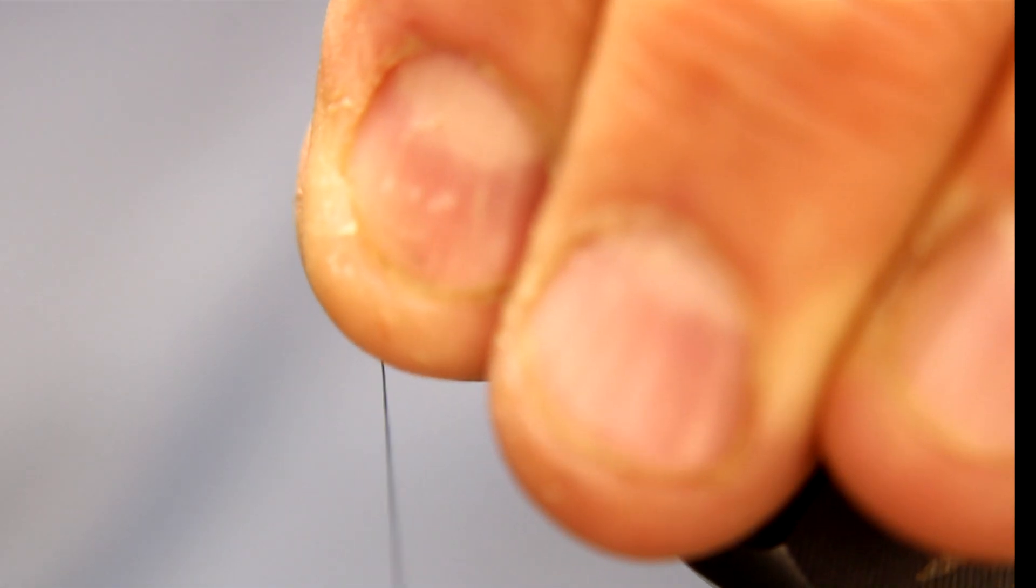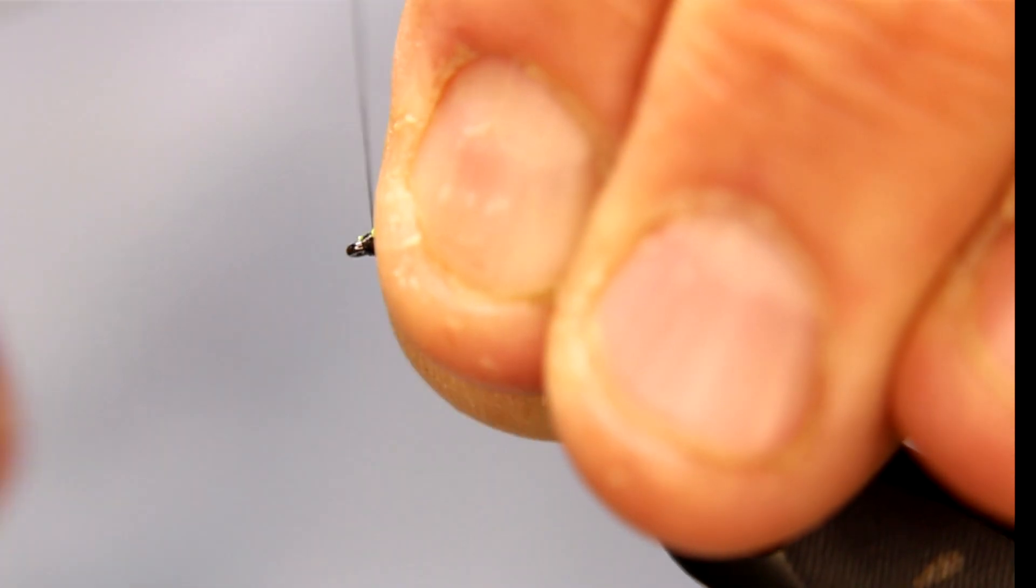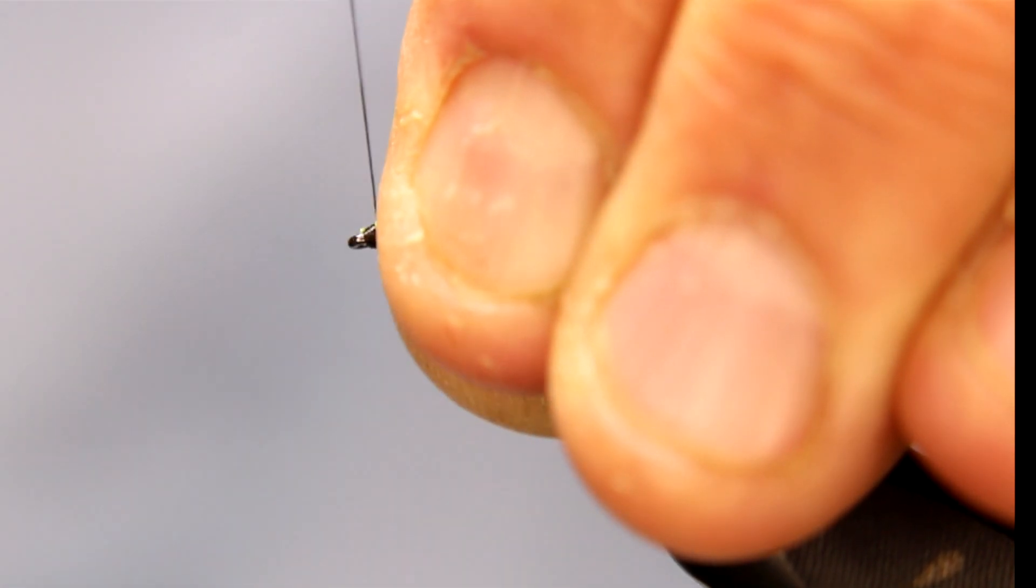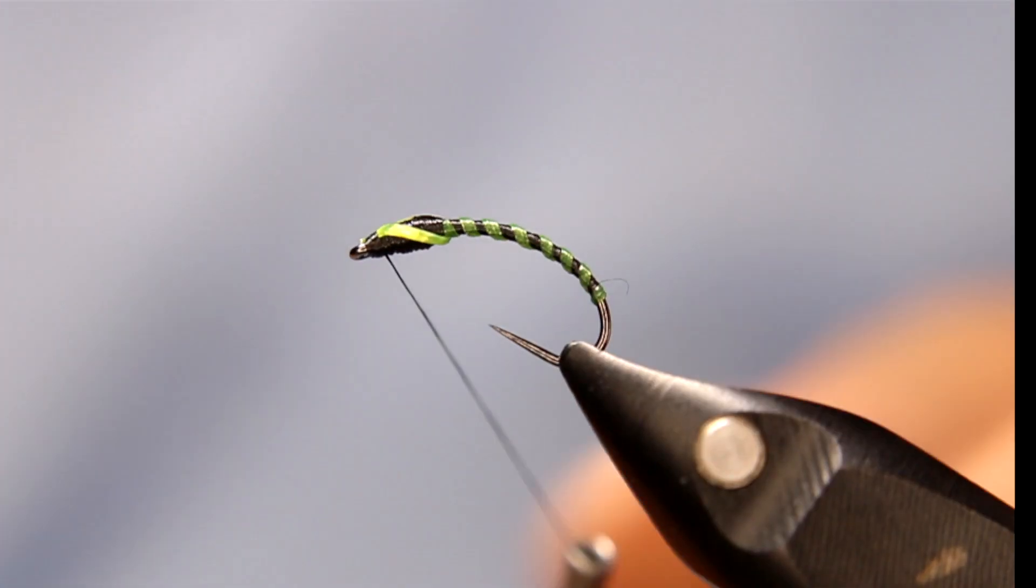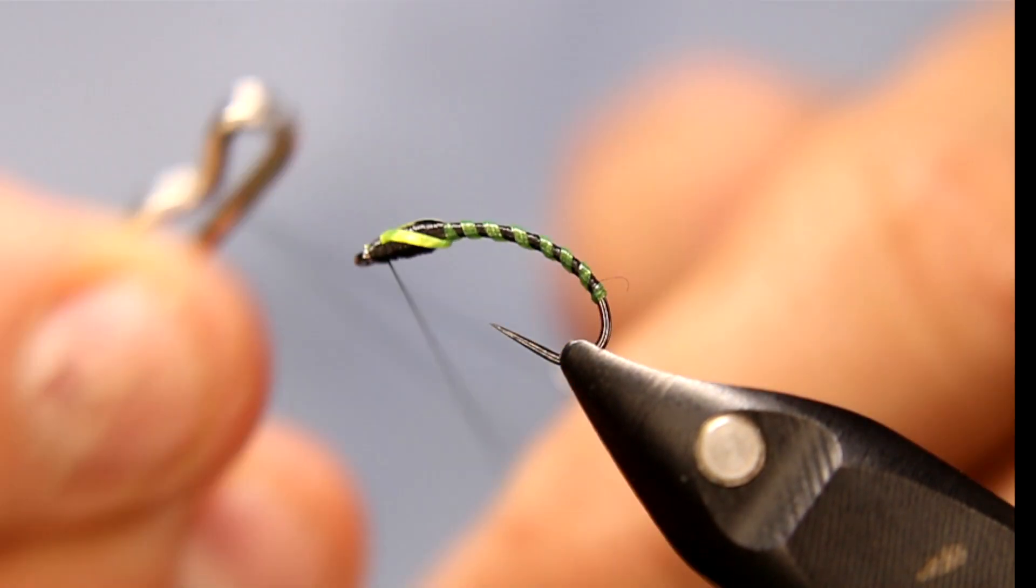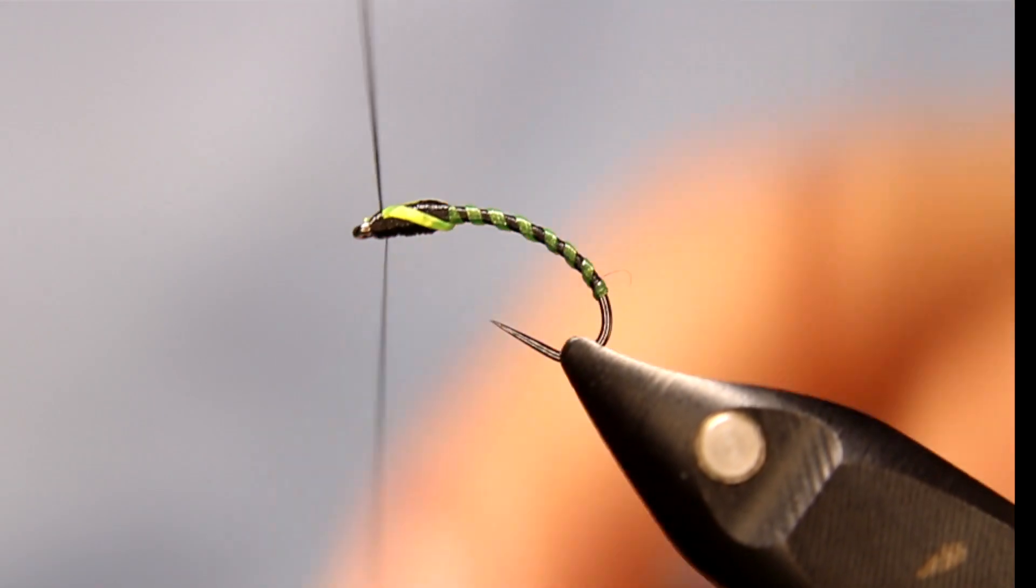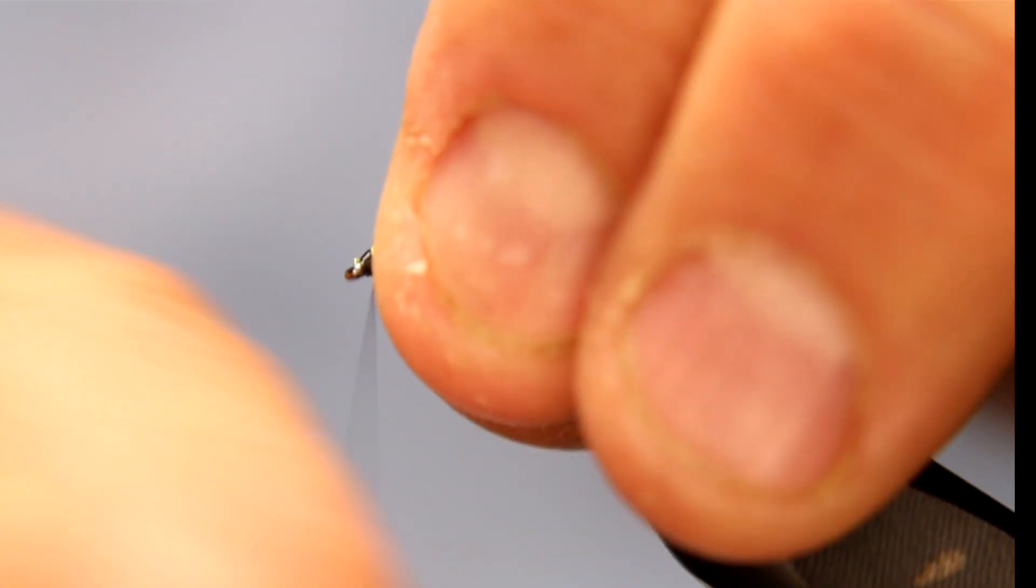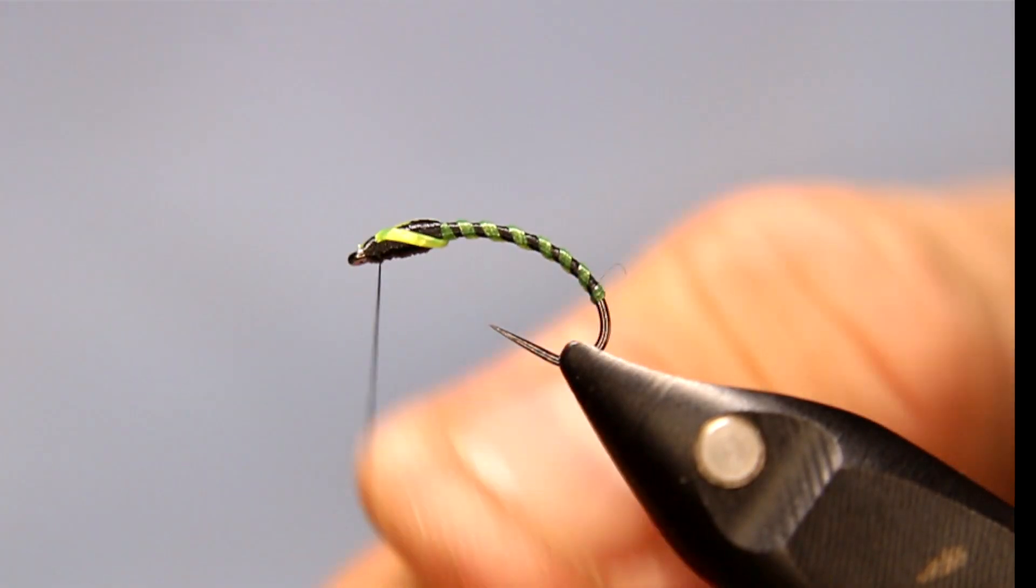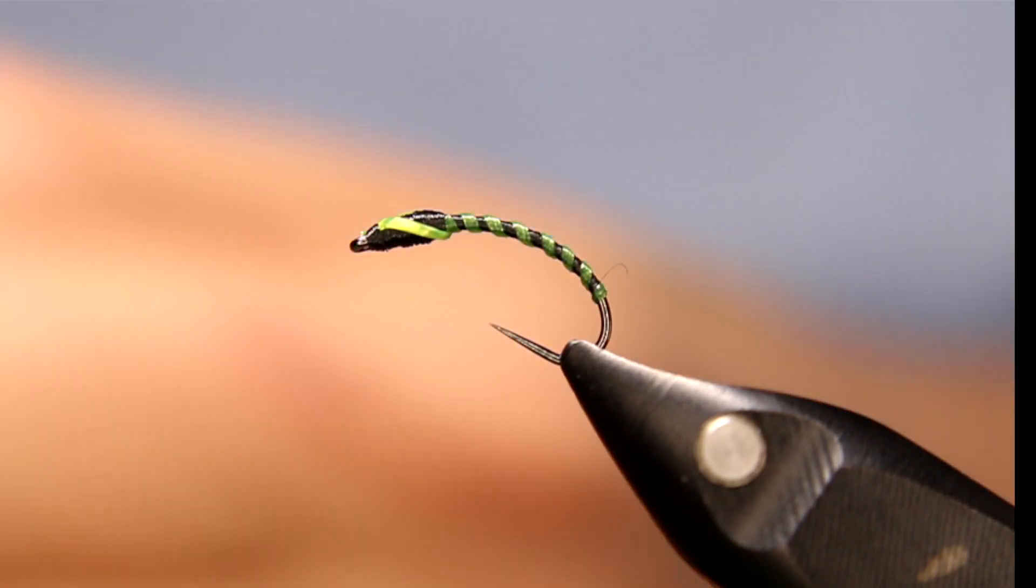Now I'm just gonna build a little bit of a head. So once I get that up there, I just want to build a little bit of a head back over top. I want to make sure those wing buds don't pop off. One, two, three. Turn whip finish. Nice and tight. Don't tighten too much with this stuff, nano silk will cut it, right?